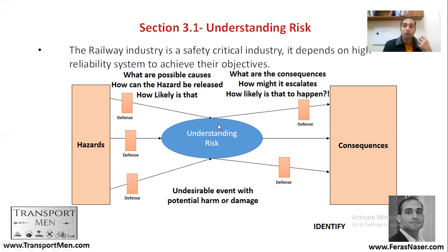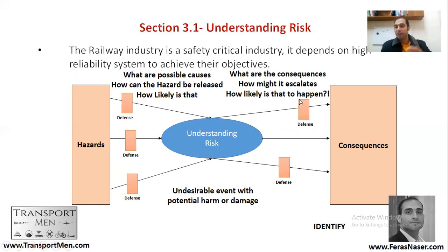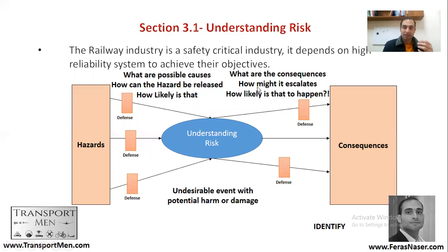We also need to think about the consequences and how they can escalate. Should we have doors before the platform so people have several barriers before reaching the train? This would stop incidents from interaction between passengers and trains — for example, a door that opens or closes based on what happens within the station. So we think about consequences, how they might escalate, and how likely that is. We think about both consequences and hazards, and based on that we understand the risk.